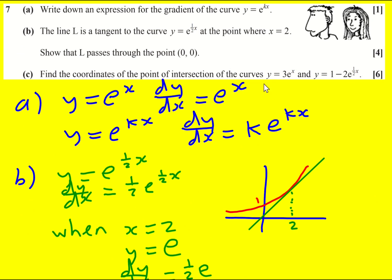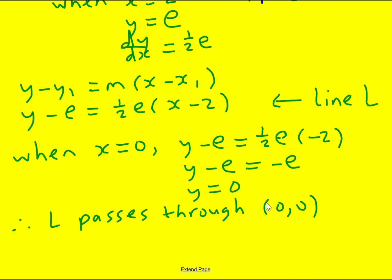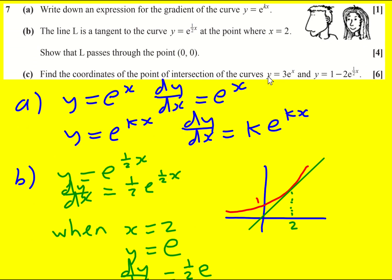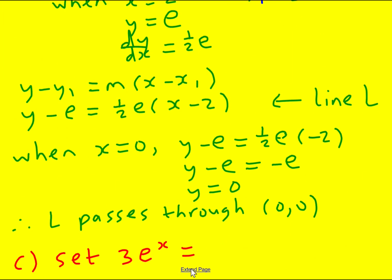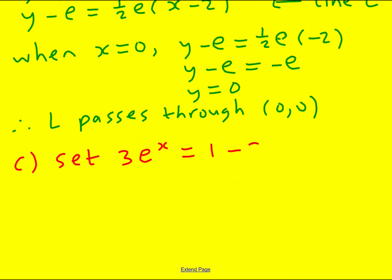We're then asked a different question. Find the coordinates of the point of intersection of the curves y equals 3 e to the x and y equals 1 minus 2 e to the half x. This is essentially a simultaneous equation, but with exponentials in the mix. So I can set 3 e to the x equal to 1 minus 2 e to the half x. Let's write it all on one side.